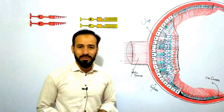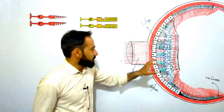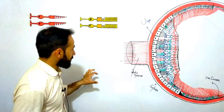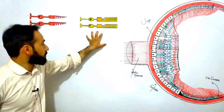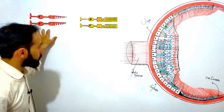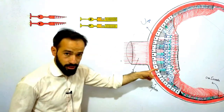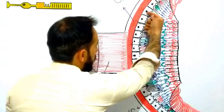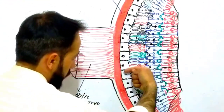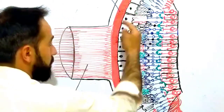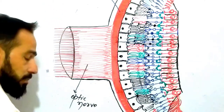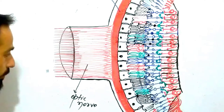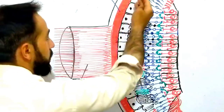Welcome back to Top Lesson. We are discussing the structure of the human eye. In this lecture, I am going to discuss the structure of the rods and cones cells which are present in your retina. This is the retinal pigment epithelium, which I discussed in the previous lecture and will discuss in coming lectures also.